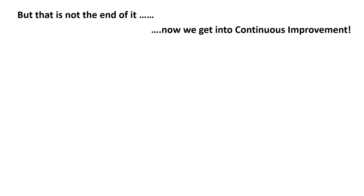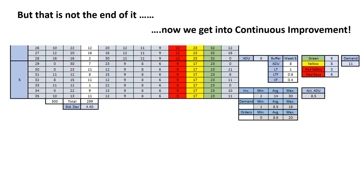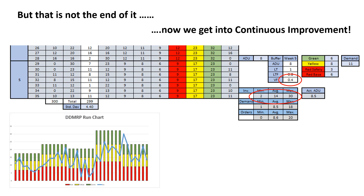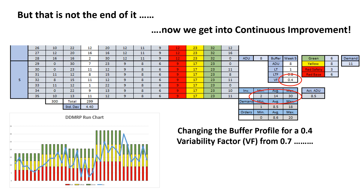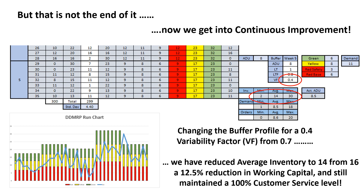But that is not the end of it — now we can get into some continuous improvement. Looking at the DDMRP run chart, I think we can reduce the variability factor and thereby reduce the average inventory in the buffer. Let us try a variability factor of 0.4. We run the simulation again, and we still have 100% customer service. The minimum inventory is now 2, with a maximum of 30 and an average of 14. The run chart shows we still dipped into the red zone five times, but maybe penetrated a little deeper. So, changing from a variability factor of 0.7 to 0.4, we have reduced the average inventory from 16 to 14 — a 12.5% reduction in working capital — and still retained a 100% customer service level.